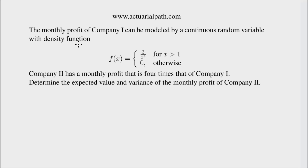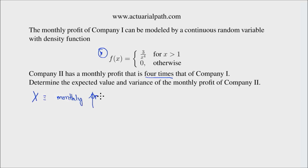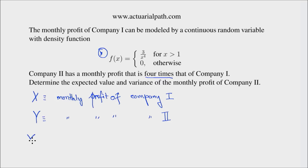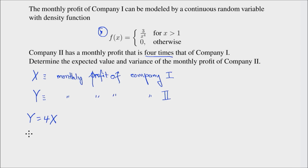Let's do an example. The monthly profit of company one can be modeled by a continuous random variable with a PDF given as shown. Company two has a monthly profit that is four times that of company one. We need to find the expected value and the variance of the monthly profit of company two. Let x be the monthly profit for company one, and y be the monthly profit for company two, so y equals 4x.